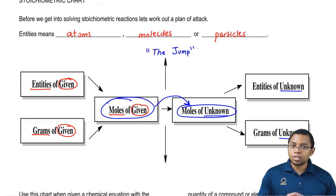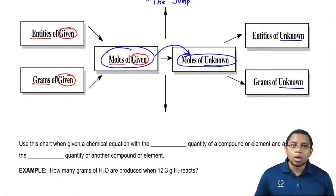So as we go from moles of given to moles of unknown, that's our jump. We're going to say when we make this transition, we have to do what's called a mole to mole comparison.